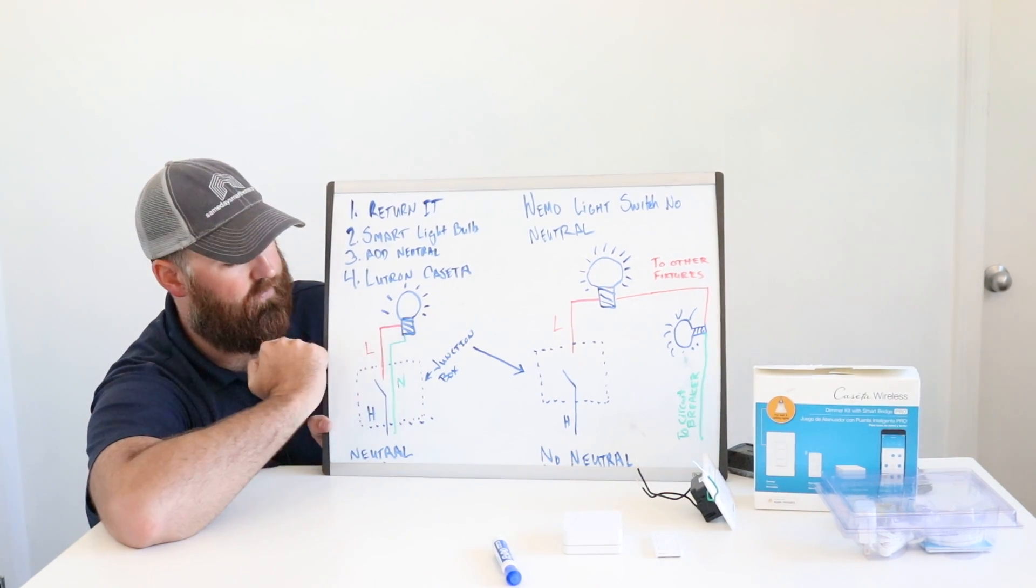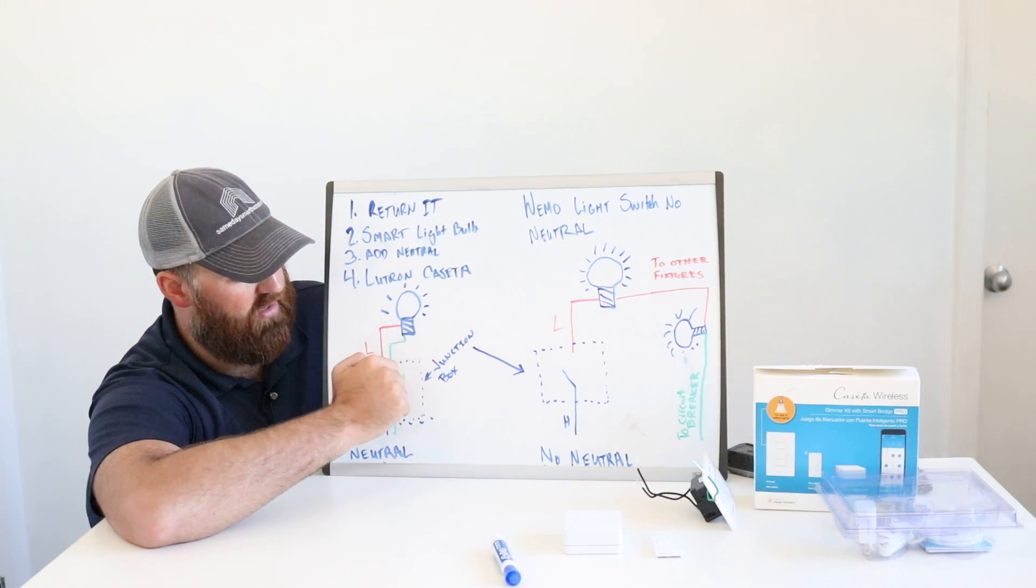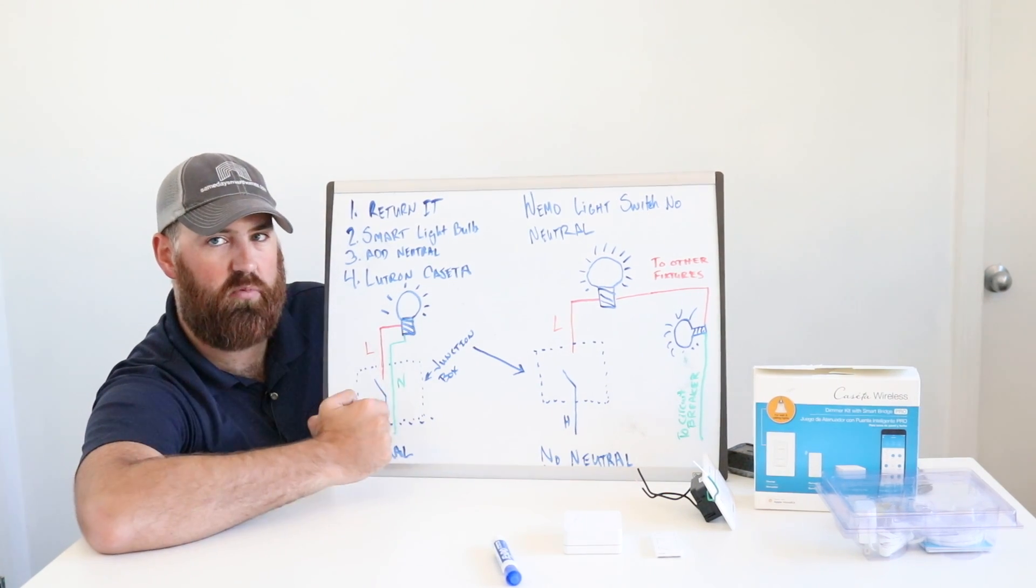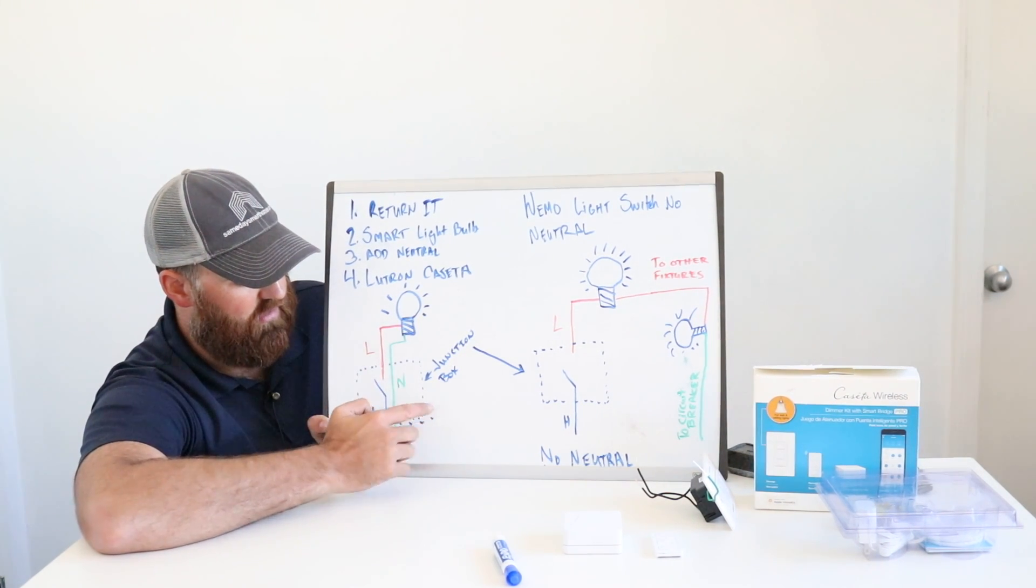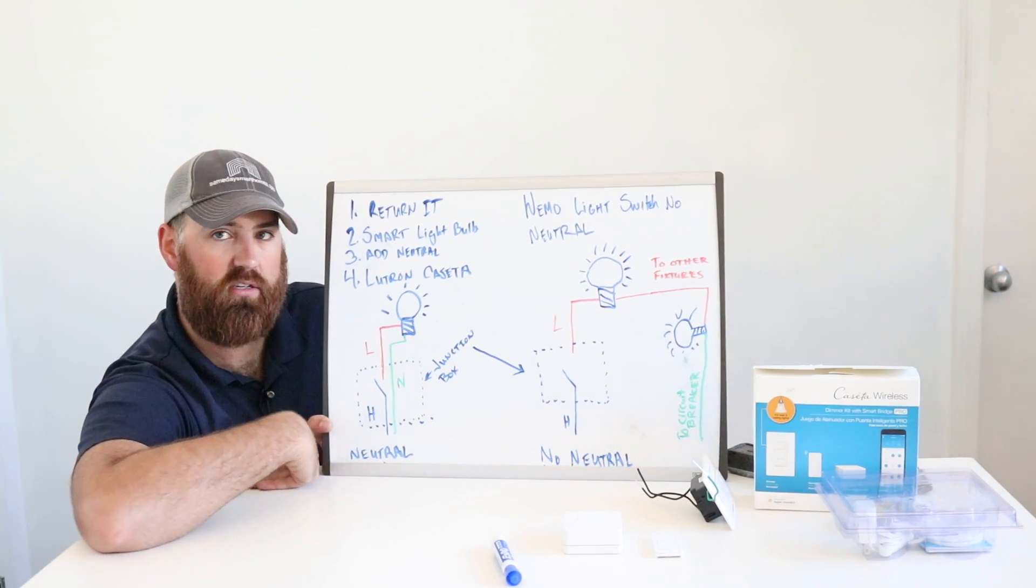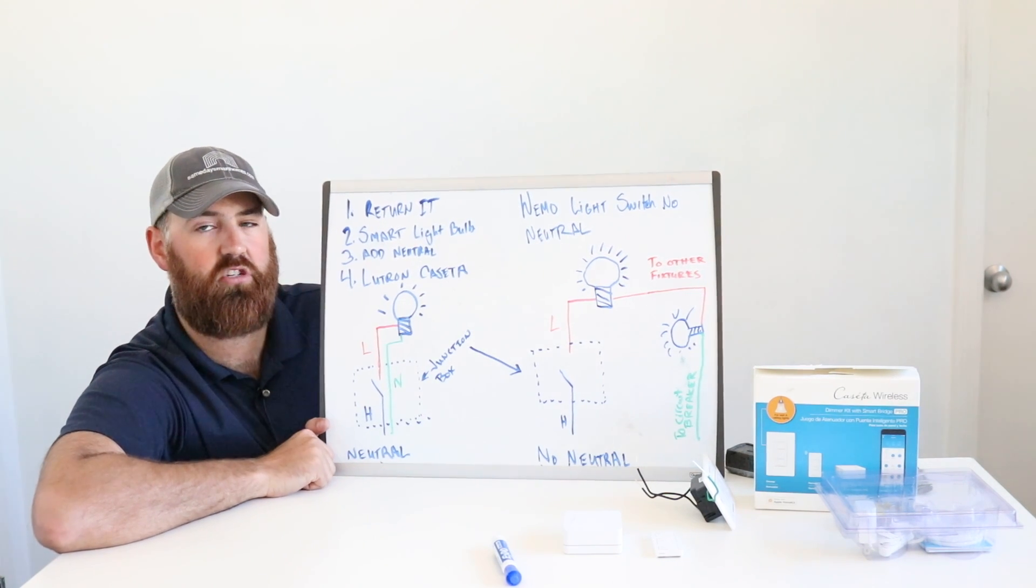And from the light fixture, you would then have a white wire, typically a neutral wire. They would come back through this junction box, this switch box. And you would have three wires in your switch box, which would be enough for a Wemo light switch.